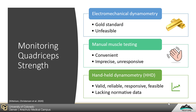Several options are available to clinically monitor quadricep strength after TKA. Electromechanical dynamometry is the gold standard, but may not be feasible for routine clinical use. Manual muscle testing is quite feasible, but lacks the precision and responsiveness necessary to monitor strength recovery after TKA. Handheld dynamometry is feasible for clinical use and has favorable psychometric properties. However, there is currently no normative data for quadricep strength recovery after TKA which is specific to handheld dynamometry.